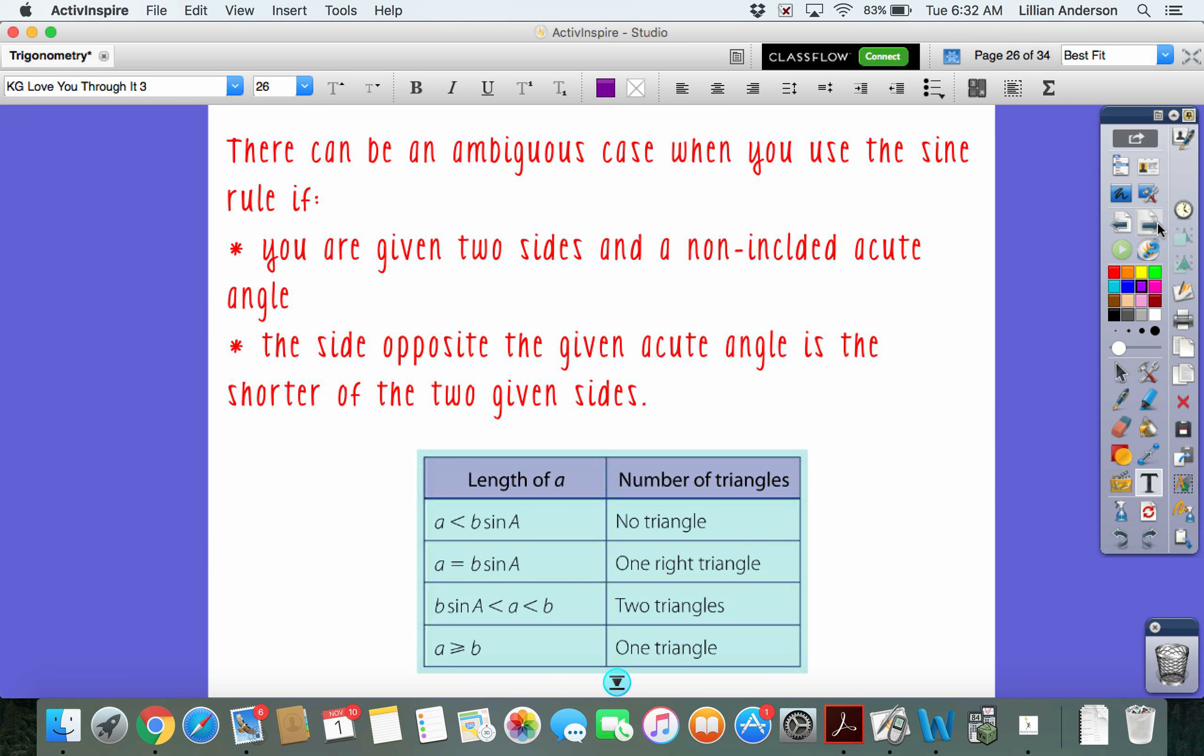Now, the last little bit of what involves sine rule is that there can be an ambiguous case when you use the sine rule. This happens when you're given two sides at a non-included acute angle, or the given acute angle is shorter than the two sides. That's when you're dealing with the ambiguous case. And the ambiguous case basically means that you can have no triangles, one triangle, or two triangles. And you basically always have to check for the ambiguous case when you're given two sides at a non-included angle.